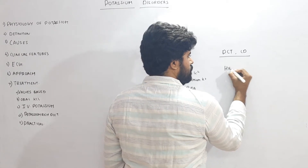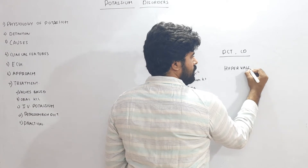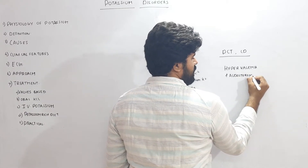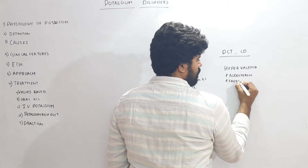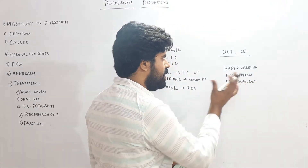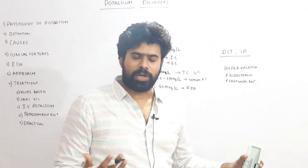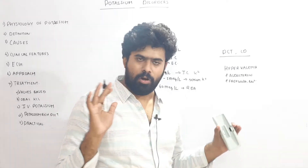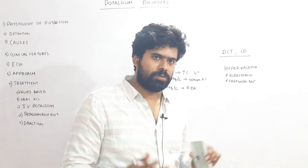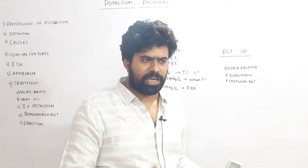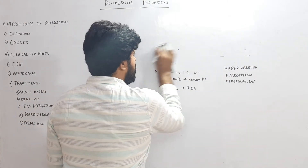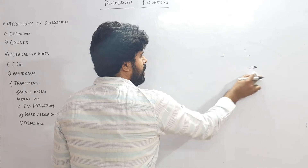Potassium secretion depends on the serum potassium value, increased aldosterone levels, and increased free water or sodium delivery to the distal convoluted tubule, all of which increase potassium excretion. Normally, about 20 milliequivalents of potassium is lost in the urine. If this loss is not replaced — for example, if the patient is given potassium-deficient IV fluids — that patient has a higher chance of developing hypokalemia.